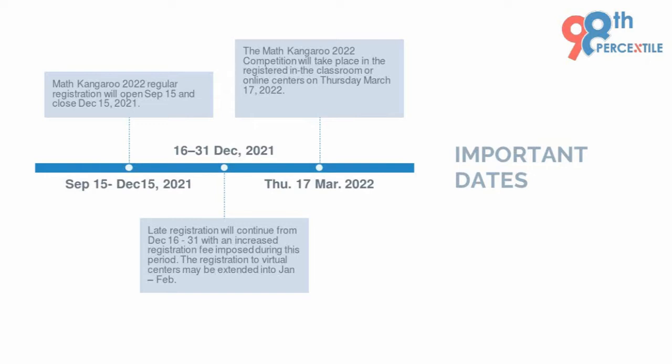Let us now discuss the important dates for Math Kangaroo 2022. Regular registration will open on September 15th and close on December 15th, 2021. Late registration will continue from December 16th to December 31st with an increased registration fee. The Math Kangaroo 2022 competition will take place on March 17th, 2022.